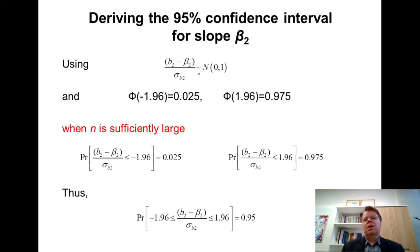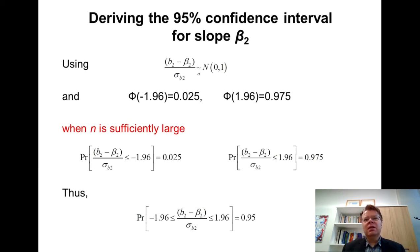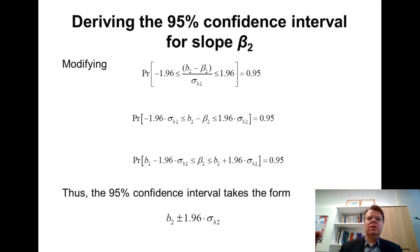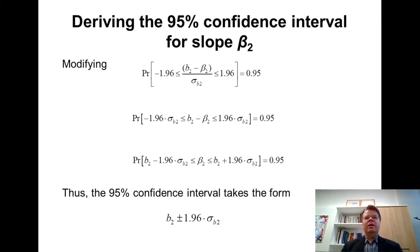To derive the confidence interval, we now have effectively derived the interval for the standardized variable. But we are not interested in a confidence interval for the standardized variable — we want the confidence interval for the beta parameter. We will do that next by simply reorganizing the inequalities within this probability expression.